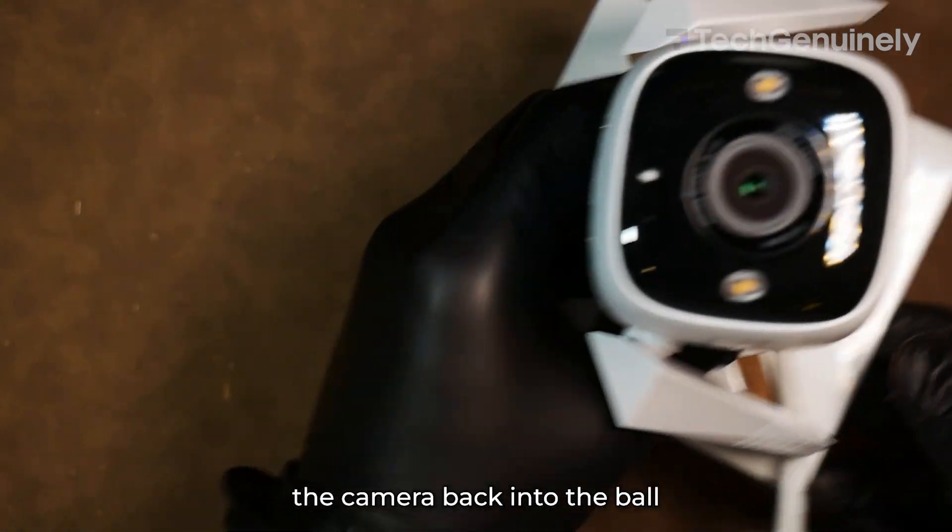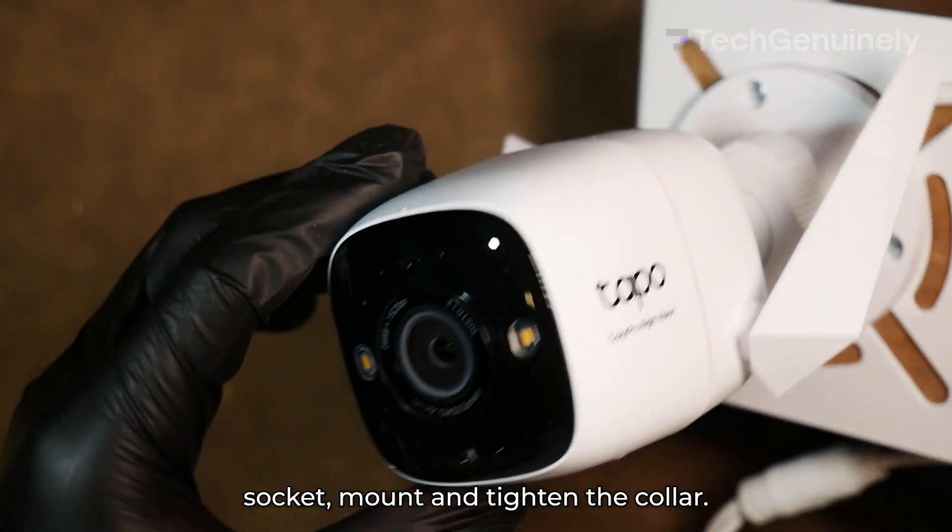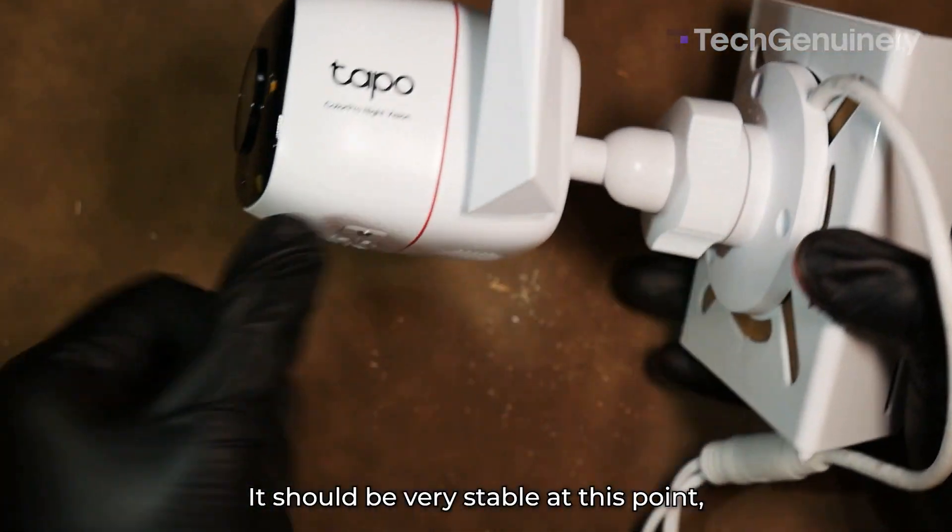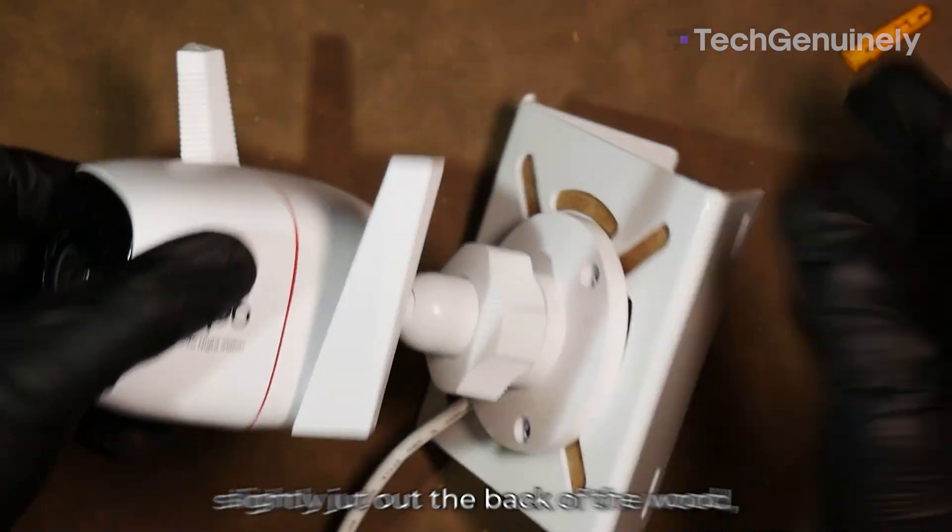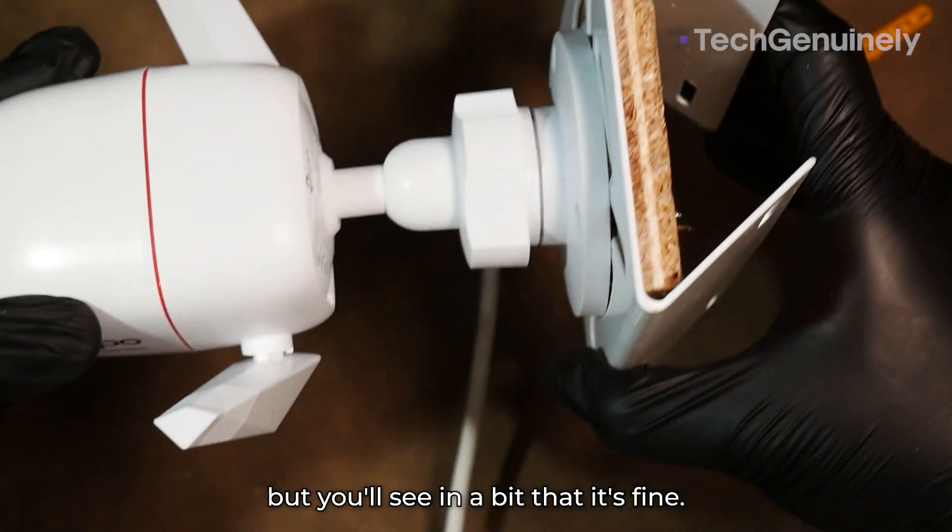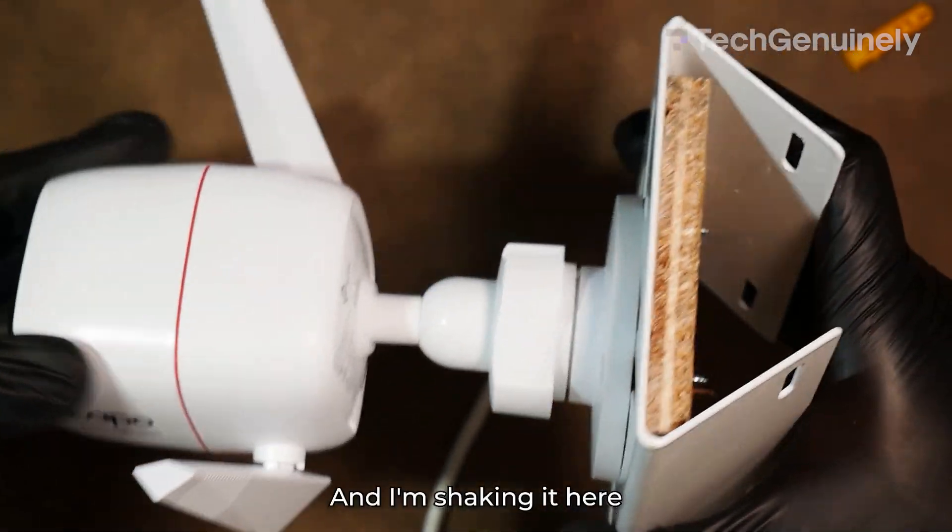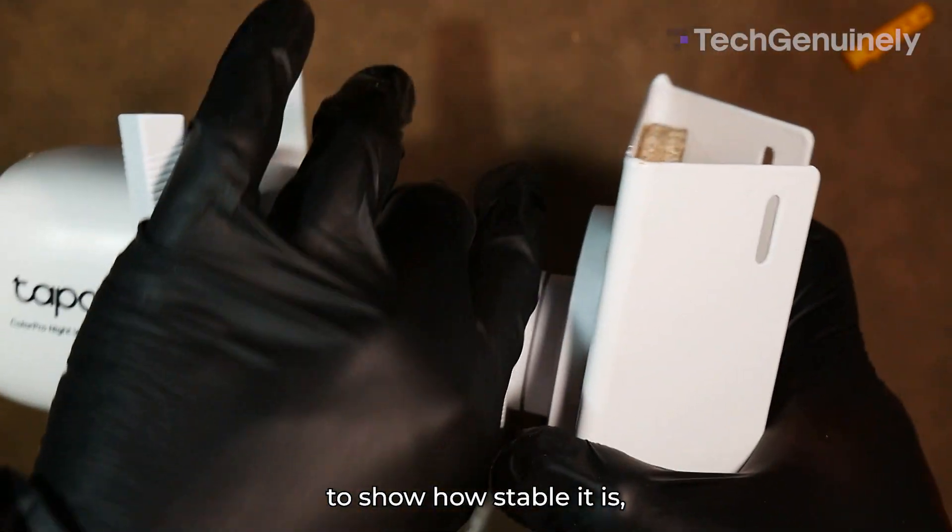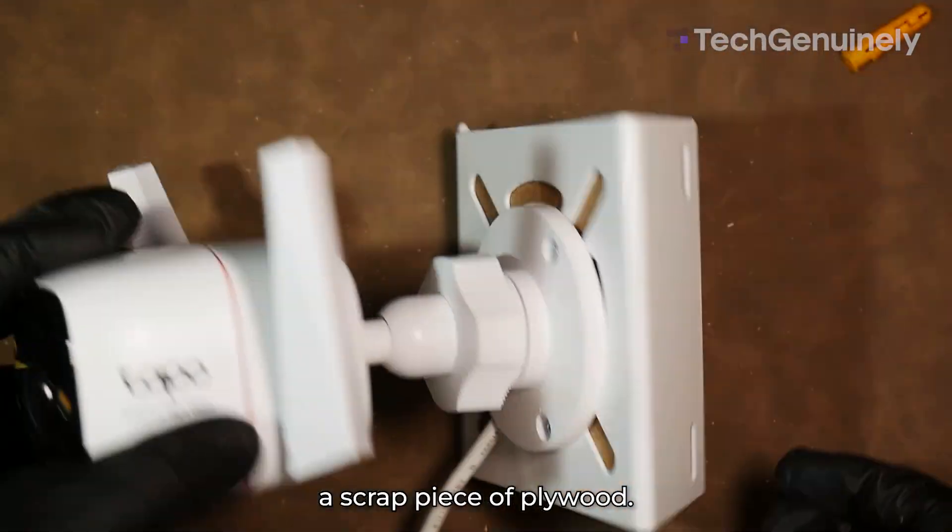Pop the camera back into the ball socket mount and tighten the collar. It should be very stable at this point, but let's just tighten everything up a bit more. The screws slightly jut out the back of the wood, but you'll see in a bit that it's fine. And I'm shaking it here to show how stable it is, even if we just used a scrap piece of plywood.